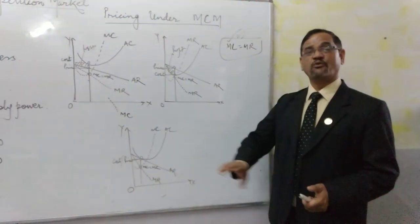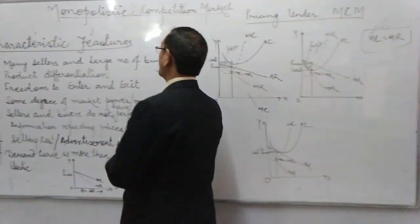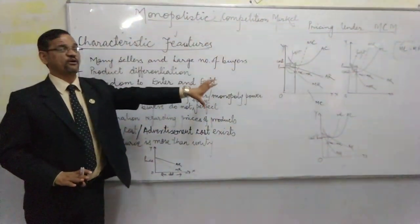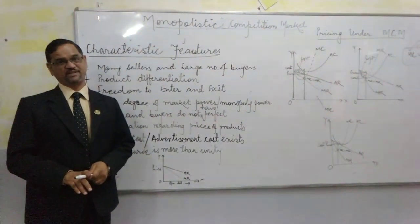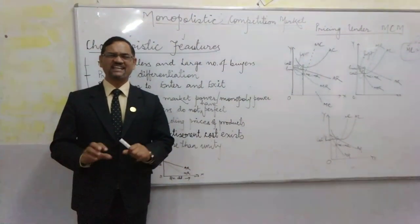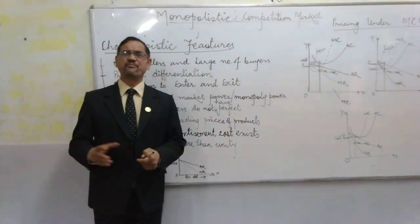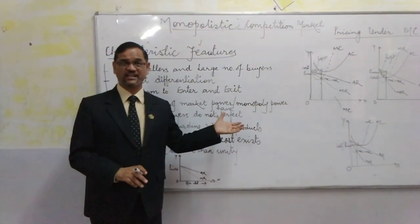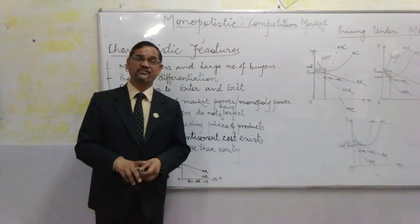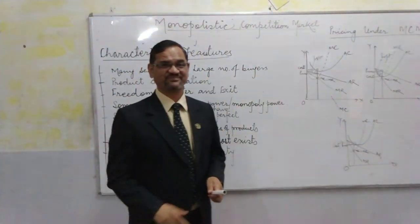I hope I have made myself very clear today — what is monopolistic competition market in a nutshell, what are the characteristics, and how do we go about price determination. I have kept it crisp and short. Please go through it, have a quick revision. If there is anything, you can ask in the comment section and I will reply. Thank you so much. Bye-bye.